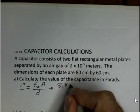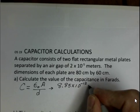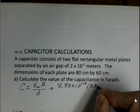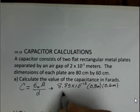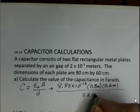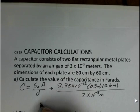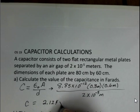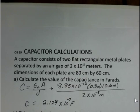8.85 times 10 to the minus 12, you can look up that constant. Standard metric units. We have 0.8 meters, can't use centimeters, and 0.6 meters. The distance was properly given in meters, 2 times 10 to the minus 5 meters. So if you put that into your calculator and do the division, you'll get a capacitance value of 2.124 times 10 to the minus 7 farads.